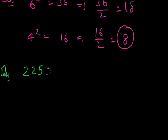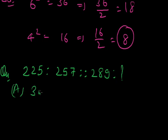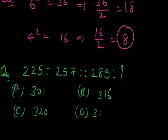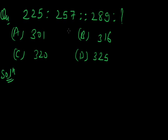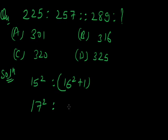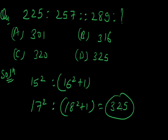Next question: 225:257:289:? Here option A, 301. Option B, 316. Option C, 320. Option D, 325. According to this figure we see here 225 is 15 square and 257 is near above 16 square, that is 16 square plus 1. And here 289 is 17 square. So according to relation between 15, 16, then here 17 and 18 square plus 1, and 18 square plus 1 is 325. Answer is 325.